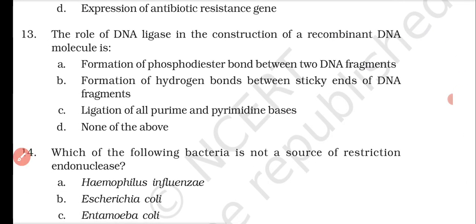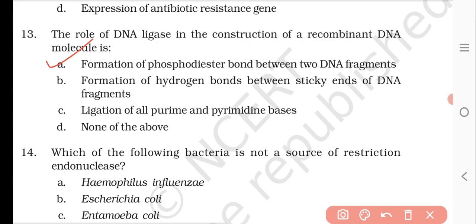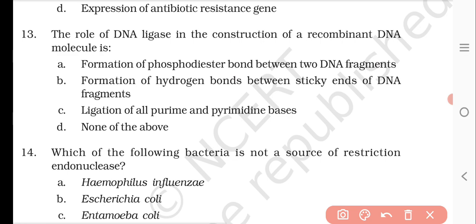Question number thirteen: the role of DNA ligase in the construction of a recombinant DNA molecule. DNA ligase is used to form a phosphodiester bond between DNA fragments. Options are: formation of a phosphodiester bond between two DNA fragments, formation of hydrogen bonds between sticky ends of DNA fragments, ligation of all purines and pyrimidines, or none of the above. The right answer is A — formation of the phosphodiester bond — because hydrogen bonds are never formed between DNA molecules in ligation.